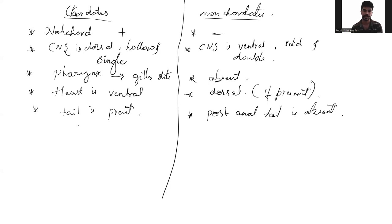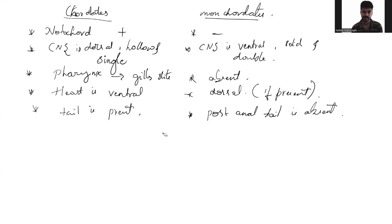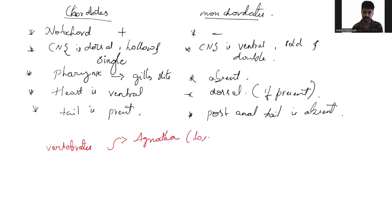Coming to vertebrates: within chordates I mentioned three subphyla. Vertebrates have been divided into two groups — Agnatha, which are organisms that normally lack the jaw, and Gnathostomata, which normally bear the jaw.